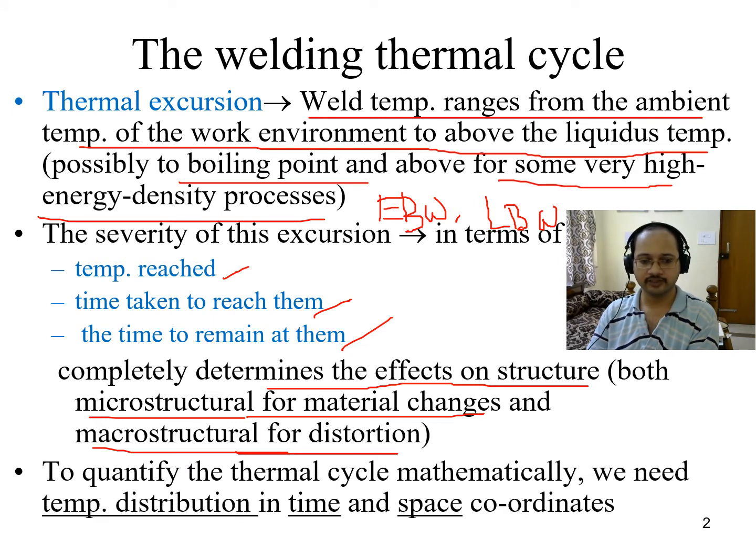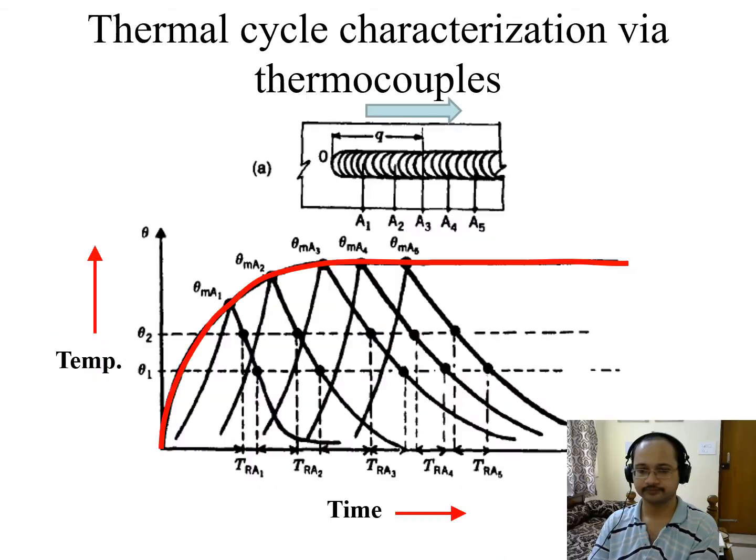To quantify the thermal cycle mathematically we need temperature distribution in time as well as space coordinates. Thermal cycle characterization via thermocouples. Now we see here that welding is being done from left to right, so these are the different points where thermocouples have been placed - A1, A2, A3 up to A5, and this is the starting point as you go.